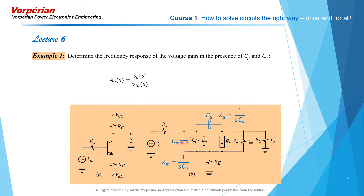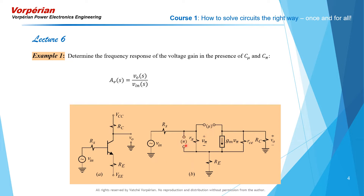We use the high-frequency model of the bipolar transistor, which includes the base-to-emitter capacitance C_pi and the collector-to-base capacitance C_mu. This is a second-order system, and to apply the two extra element theorem (2EET), we take out these two reactive elements. We take out C_mu and designate its port as port mu, and take out C_pi and designate its port as port pi.